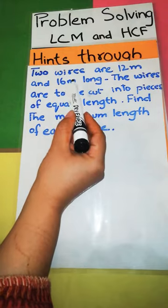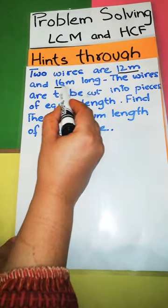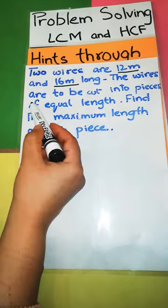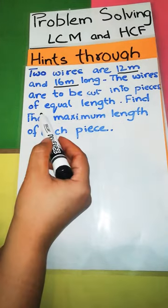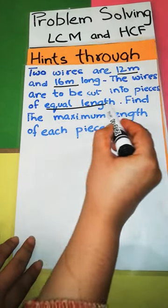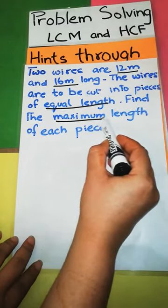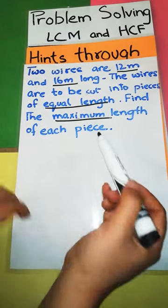Two wires are 12 meter and 16 meter long. The wires are to be cut into pieces of equal length. Find the maximum length of each piece, right?